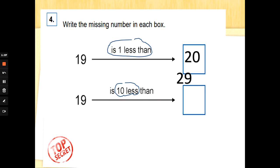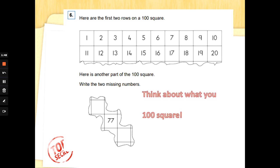What's 10 more than 19? We add another 10. One 10 add another 10, we wouldn't have 19 anymore, we'd have 29. Wouldn't we? Well done. Number six: here are the first two rows of a 100 square. Here is another part of the 100 square. Write in the two missing numbers. Think about what you already know about how to use a 100 square. Don't let this trick you. It's not going in a straight line.